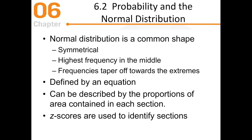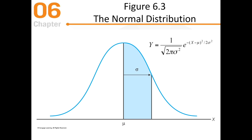Normal distribution is a common shape — symmetrical, so the left-hand side looks like the right-hand side, with the highest frequency piling up in the middle. Towards the ends, frequencies taper off toward the tails. It is defined by an equation, but you don't need to know it. It can be described by proportions of area contained in each section, and z-scores help us identify those sections. Knowing the z-score allows us to know the probability of getting that exact score.